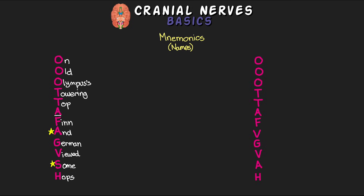A more modern mnemonic that is also popular goes: 'On Occasion Our Trusty Truck Acts Funny, Very Good Vehicle Anyhow.' Once again, the first letter of each word lines up with the first letter of each cranial nerve name: Olfactory, Optic, Oculomotor, Trochlear, Trigeminal, Abducens, Facial, Vestibulocochlear, Glossopharyngeal, Vagus, Accessory, and Hypoglossal.